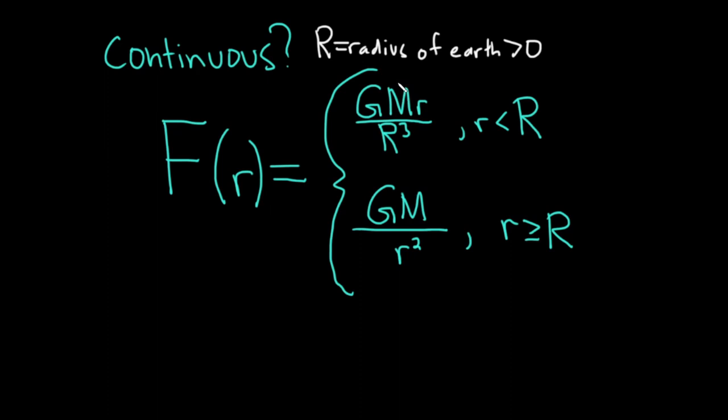So this top piece here, again, is a function of little r. So it doesn't matter what little r is. This top piece is going to be continuous because there's no funny stuff going on, right? G, M, and big R here are all constants. Little r is the only variable here. And there's no problems here, right? There's not an issue. There's no division by zero. There's no square roots. There's no logarithms. This is a nice, clean, continuous function.